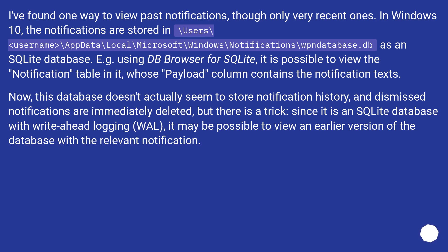I found one way to view past notifications, though only very recent ones. In Windows 10, the notifications are stored at: \Users\[Username]\AppData\Local\Microsoft\Windows\Notifications\wpndatabase.db — as an SQLite database. For example, using DB Browser for SQLite, it is possible to view the notification table, whose payload column contains the notification text.